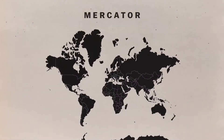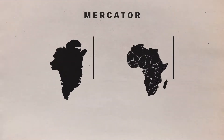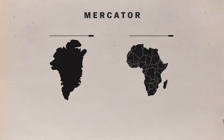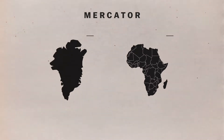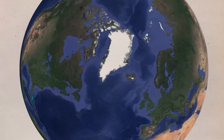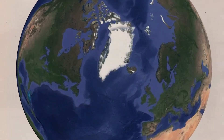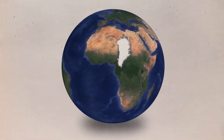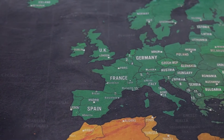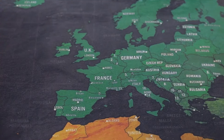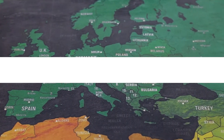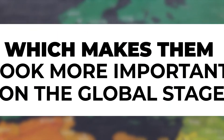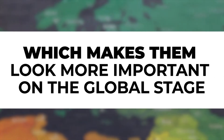The most common map projection — the one where Greenland looks as big as the whole continent of Africa — is called, appropriately enough, the Mercator projection. It's not a good representation for any kind of scientific or cartographical use. Some even say that the Mercator is so widely used because it makes Europe look bigger than it actually is, which makes them look more important on the global stage.